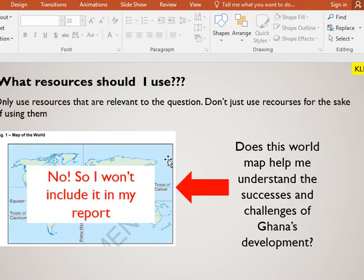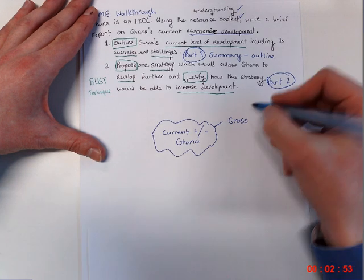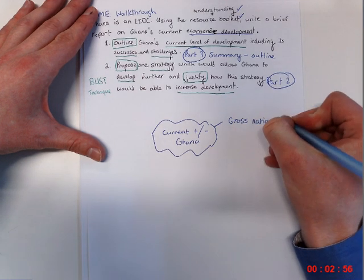So first of all, we're not going to be using the world map and the reason for that is that it does not help you understand anything to do with the successes and challenges of Ghana specifically. Now, when we come to figure two, it's really clear that there are a number of challenges that Ghana has specifically connected to economic development. And that's going to be Ghana's 1,760 GNI per capita income, gross national income. So the GNI gross national income is going to be considered as a success.